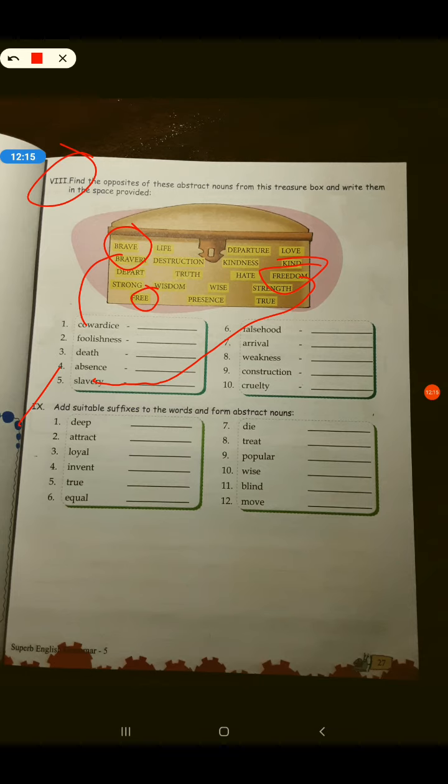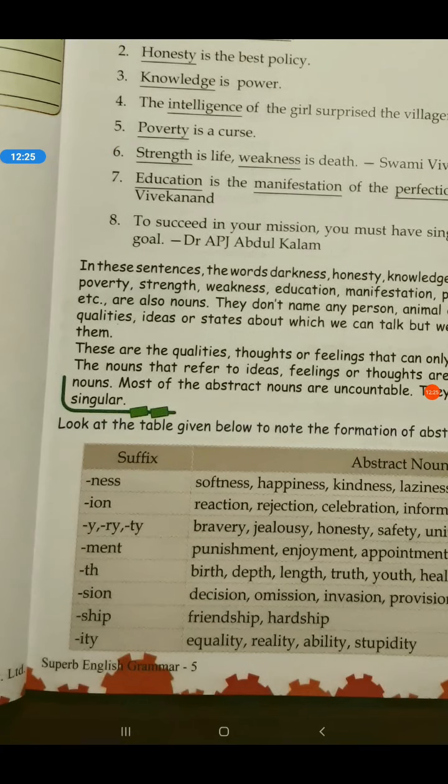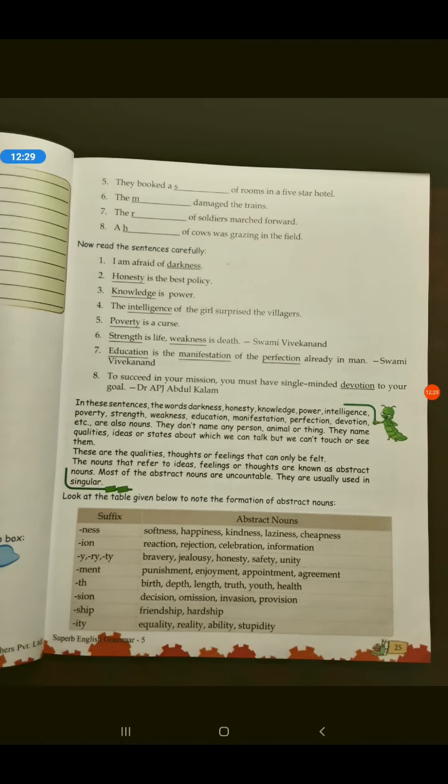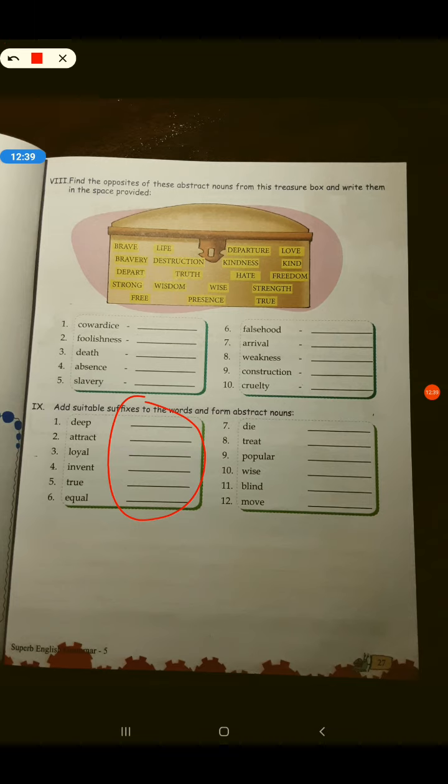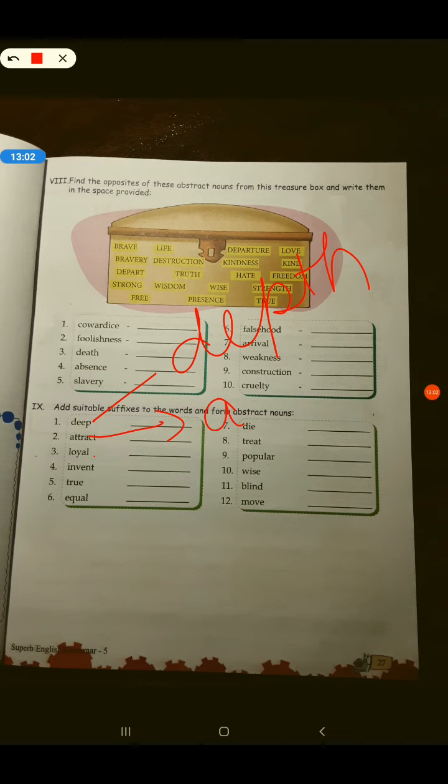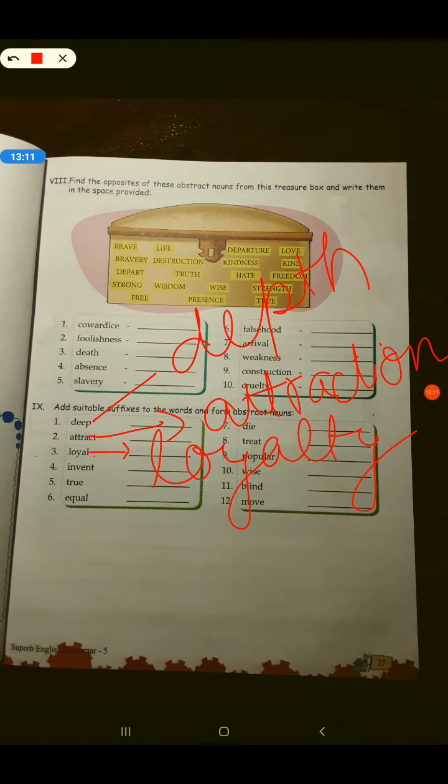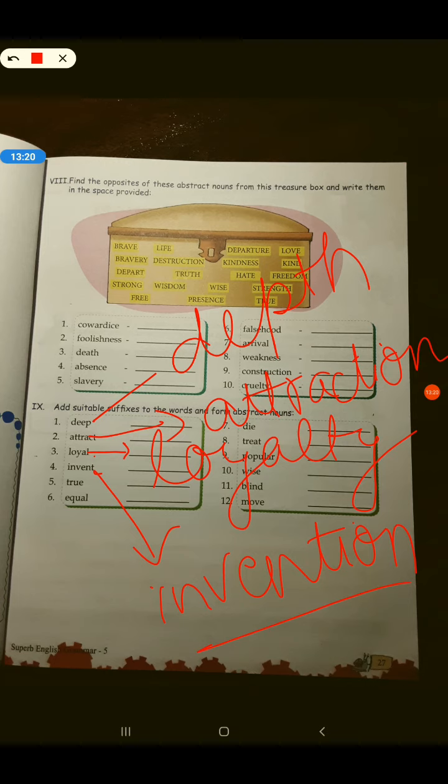Last one, add suitable suffixes to the words and form abstract noun. Isme aapko suffixes hain jaise ki humne pehle table mein padha tha. Yeh table dekhi thi na, isme suffixes diye hue hain. Yeh saare suffixes aapko use karne hain in words ke saath jo number nine mein diye hue hain. I will give four examples. Invent, invention. Loyal, loyalty. Attract, attraction. Deep, depth.